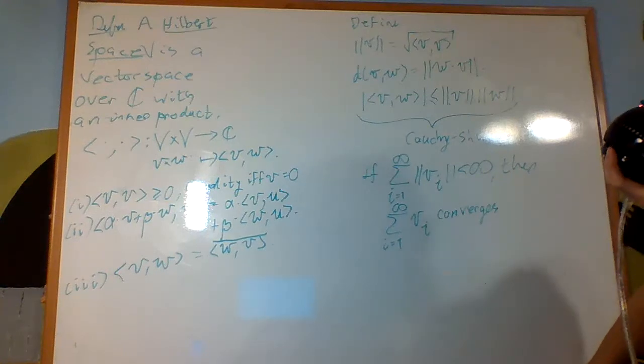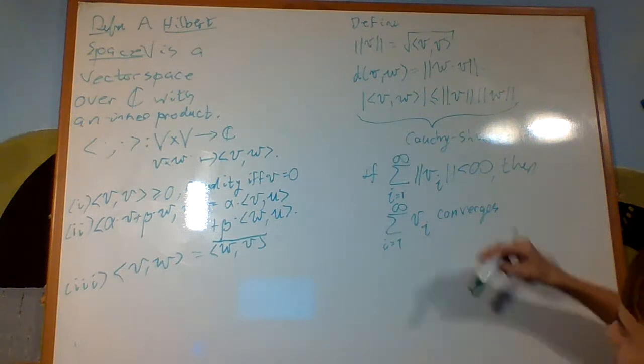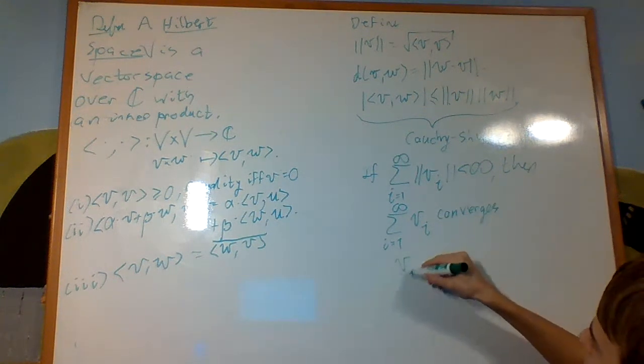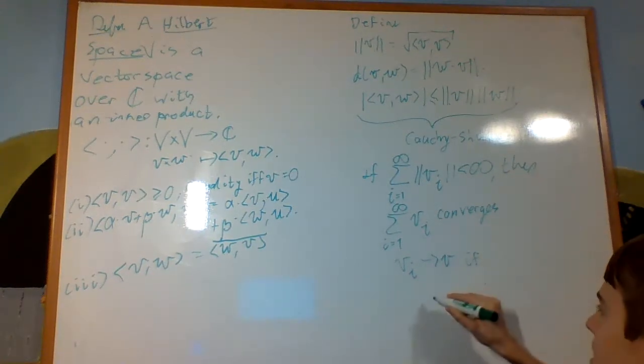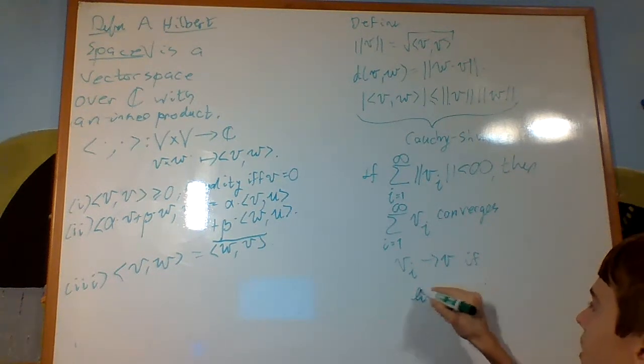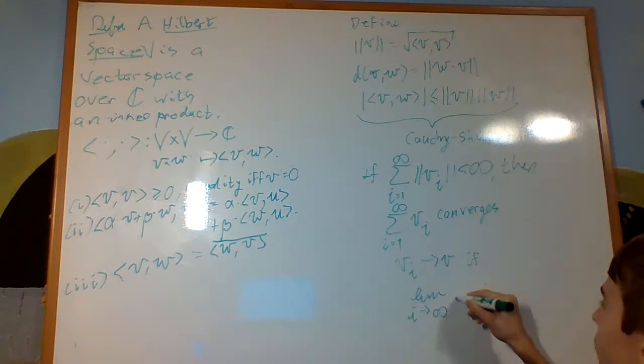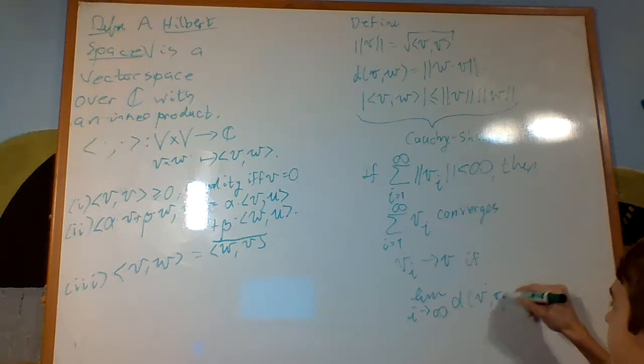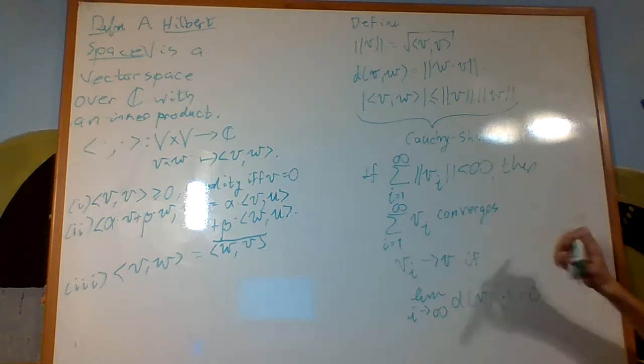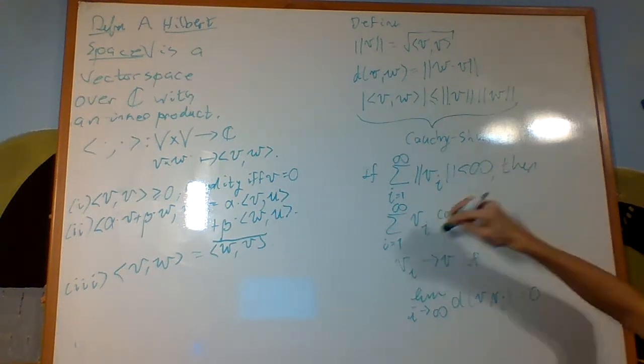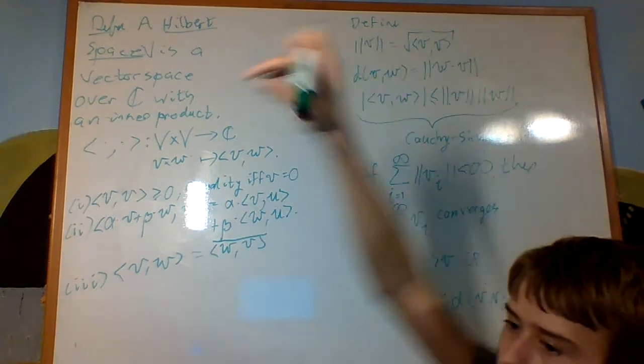What does it mean for it to converge in this? Well, that means that the distance between them is arbitrarily small. We say that a sequence VI converges to V if the limit as I goes to infinity of the distance between V and VI is equal to zero. That's what it means for it to converge. And this sequence converges to V if its limit of the partial sums converges to V.